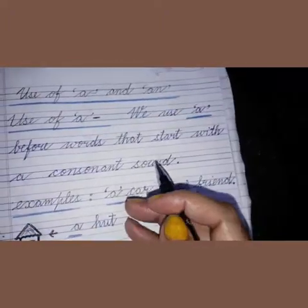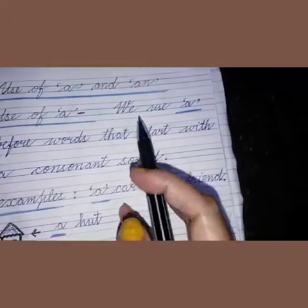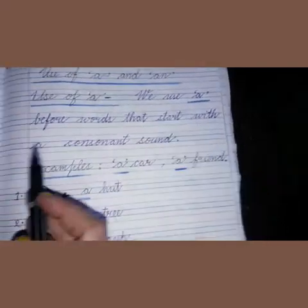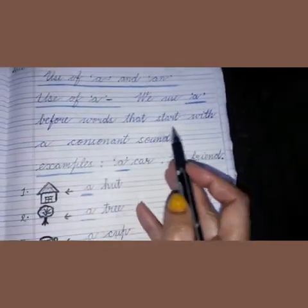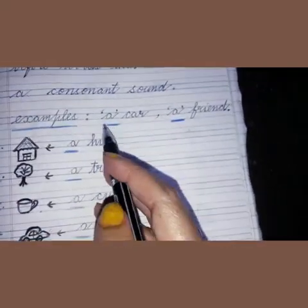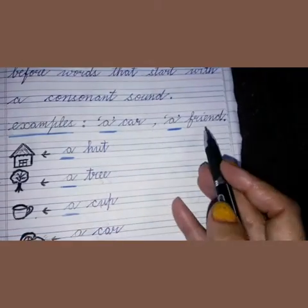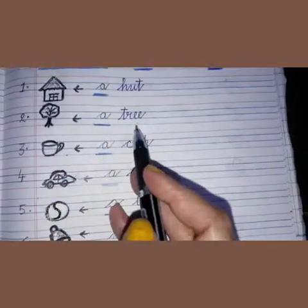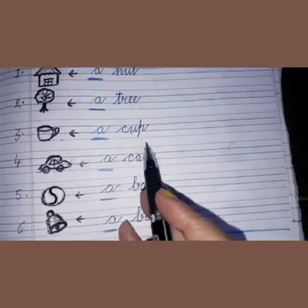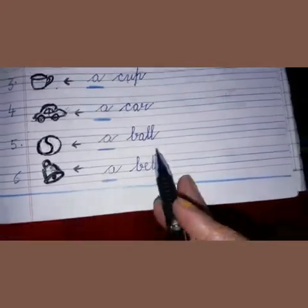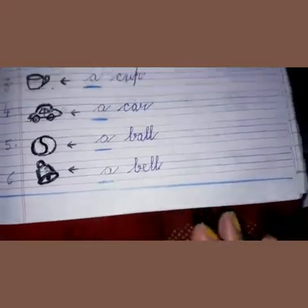So we will revise it first. We use A before words that start with a consonant sound, like a car, a friend, a hut, a tree, a cup, a car, a ball, a bell.